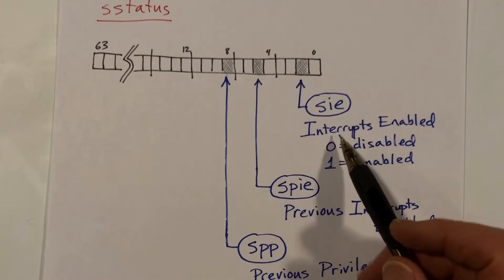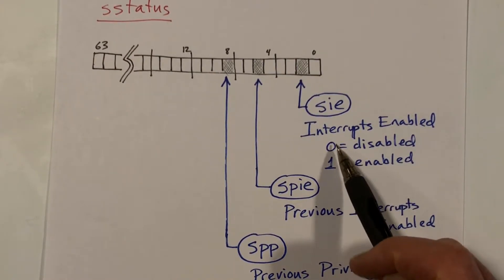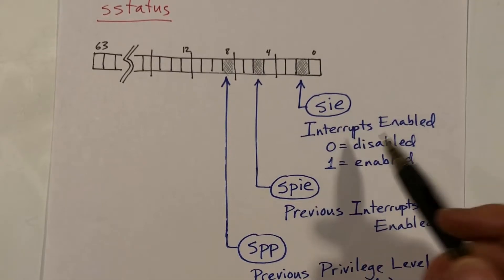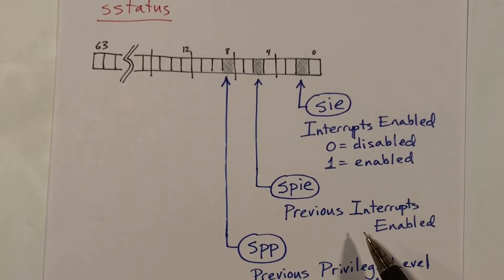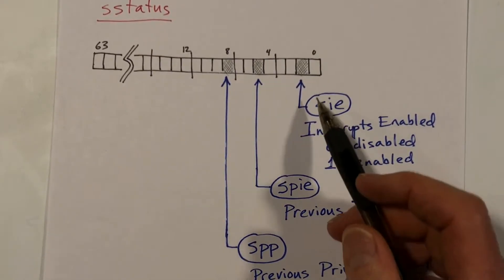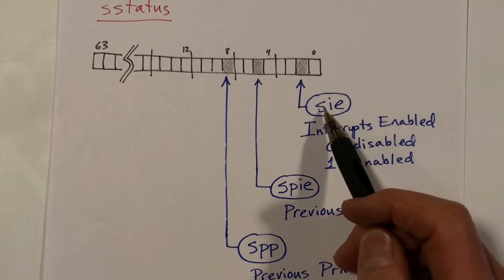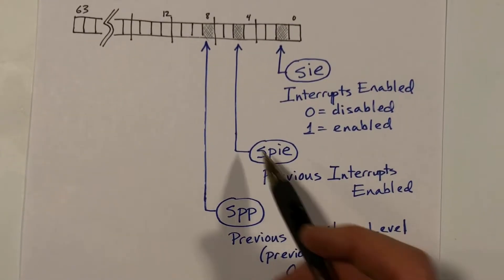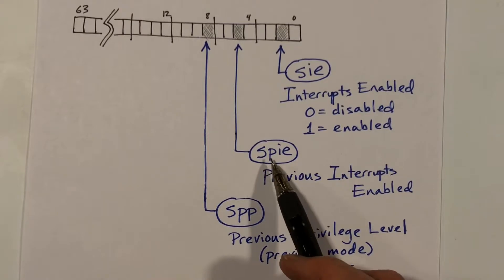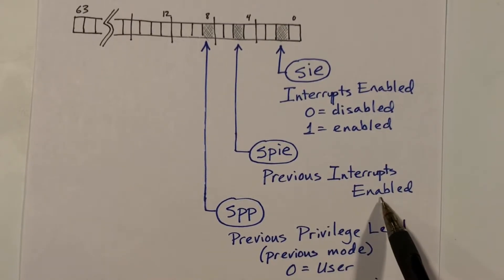There's a bit that controls whether interrupts are enabled or not, called SIE for interrupts enabled. When an interrupt occurs, we need to save the value of this bit, and it's saved in another bit in the status word called SPIE — the previous interrupts enabled bit.